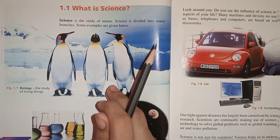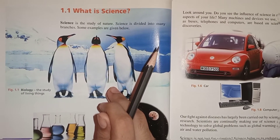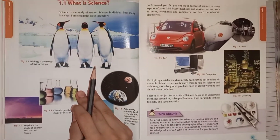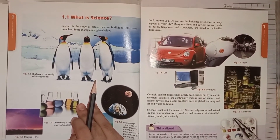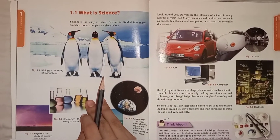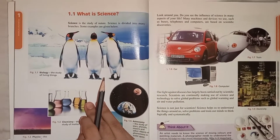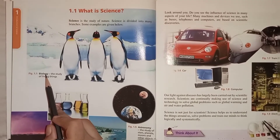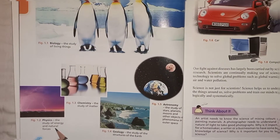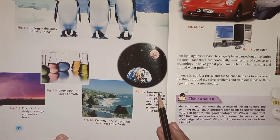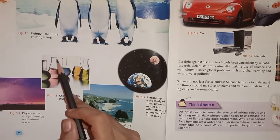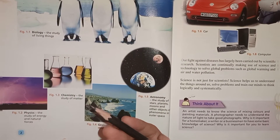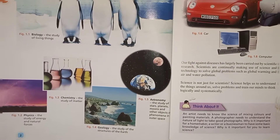There are different types of science which we are studying. We have different types of science, but right now we are going to study some major types of science, which include biology, chemistry, physics, geology, and astronomy. I will teach you one by one what is biology, chemistry, physics, geology, and astronomy.